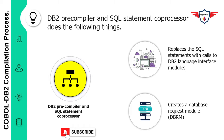The DB2 precompiler and SQL statement co-processor perform two important functions: first, replace the SQL statements in your program with calls to the DB2 language interface module; and second, create a Database Request Module (DBRM) which communicates your SQL request to DB2 during the bind process. Let me now present all this information in a simple flow diagram to help understand the COBOL DB2 compilation process.